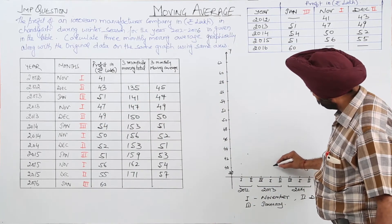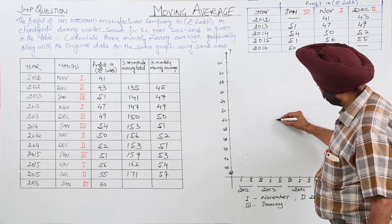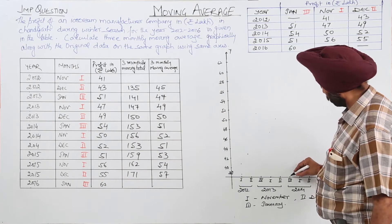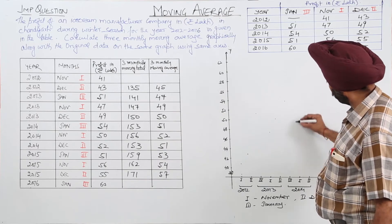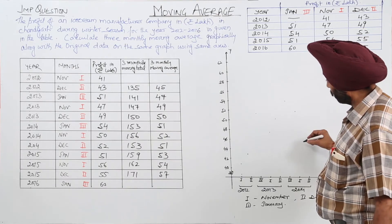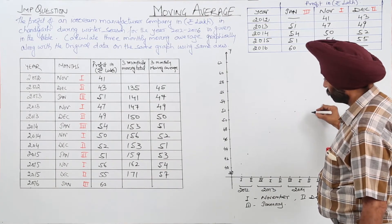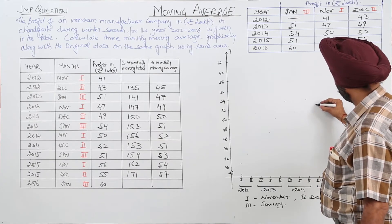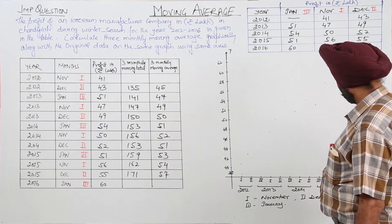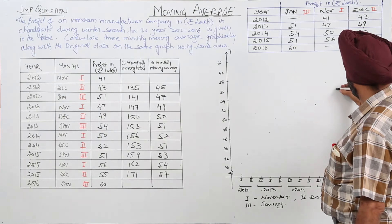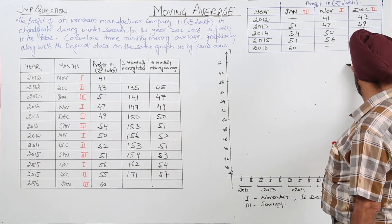So 47. Then 49, 54. Then first 50, 50, then 52. 51, then 1, 56. Then 1, 2, 55. And 3, it is 60, approximately 60.